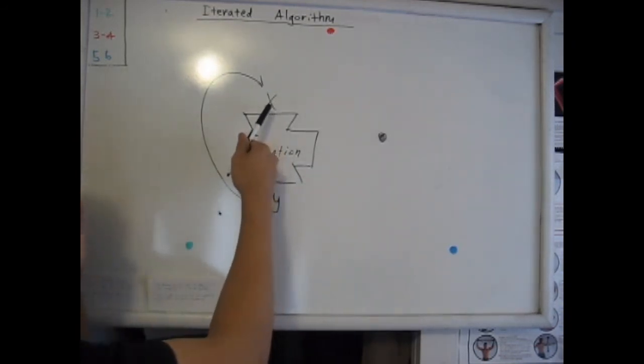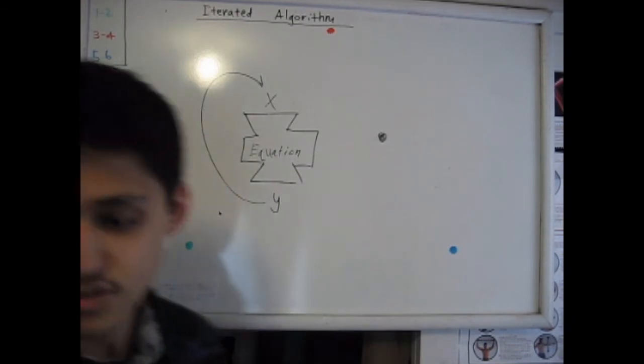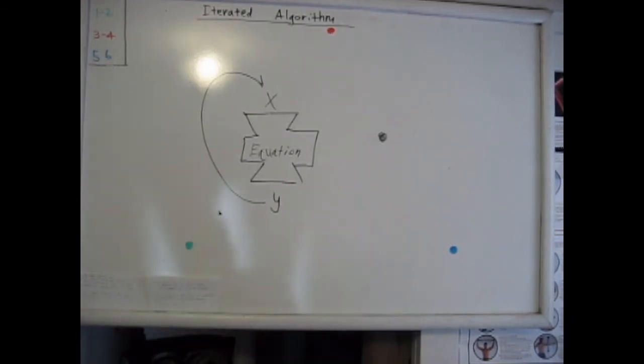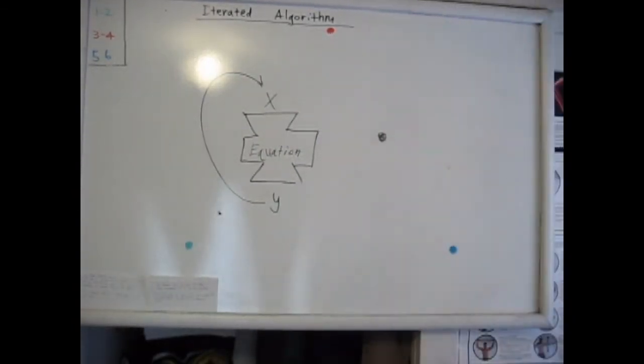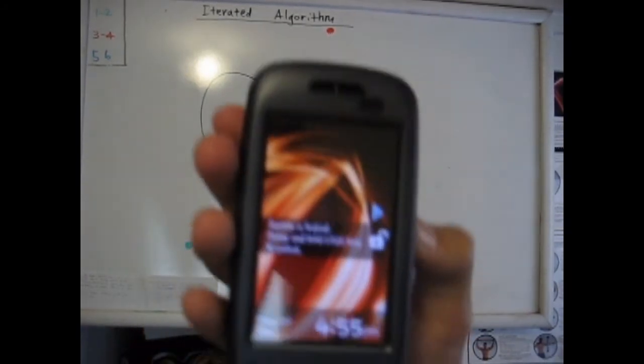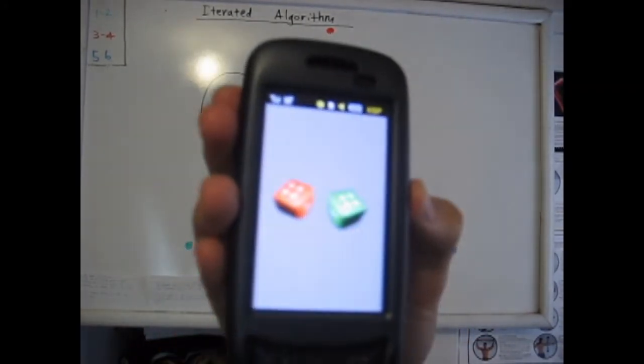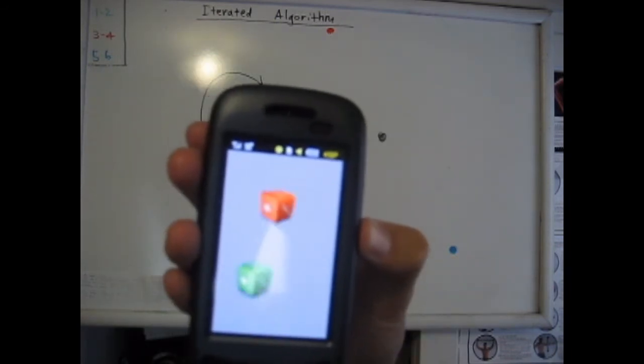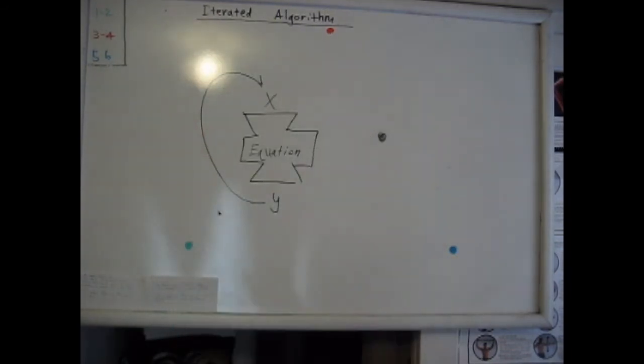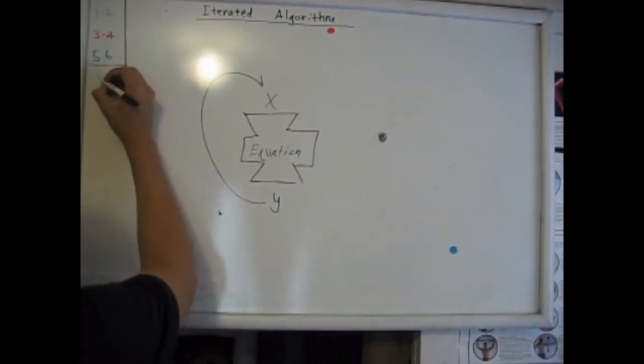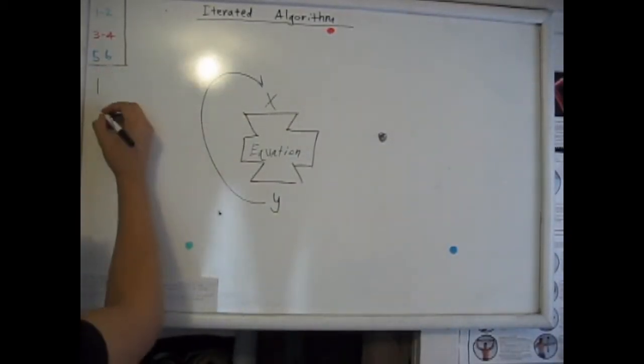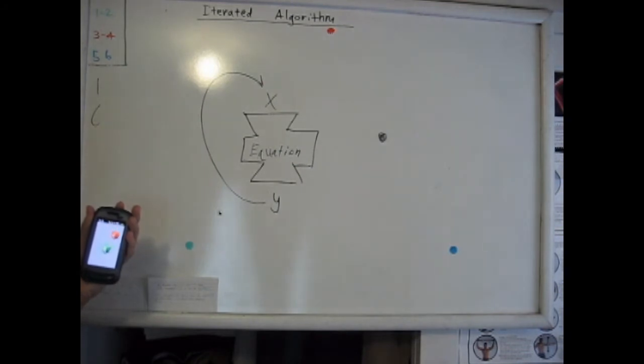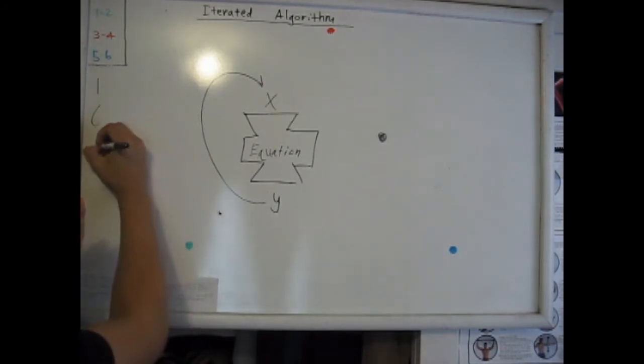So to get our Xs, I'm going to use this die, only the orange one. So that's a one. That's a six. That's a five.